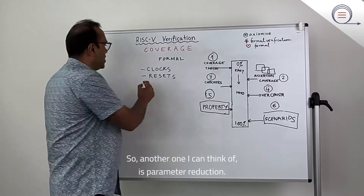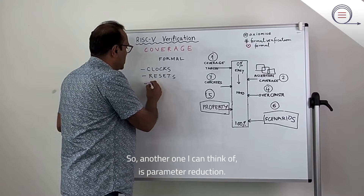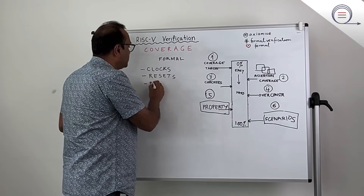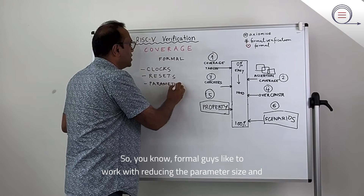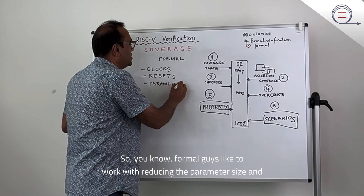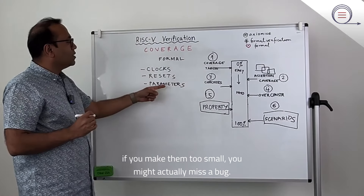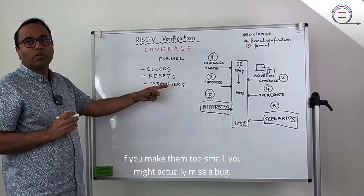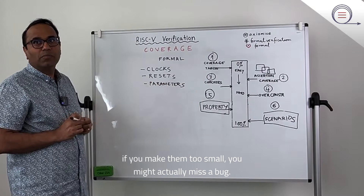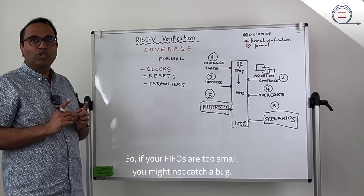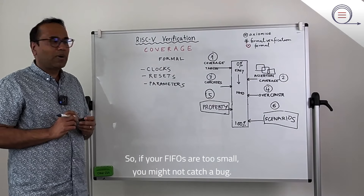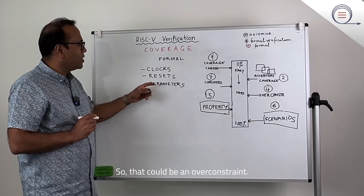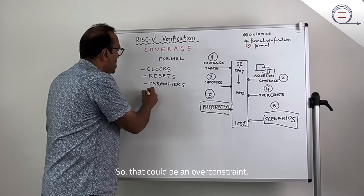Another one is parameter reduction. Formal engineers like to work with reducing the parameter size, and if you make them too small, you might actually miss a bug. So if your FIFOs are too small, you might not catch a bug. That could be an over-constraint.